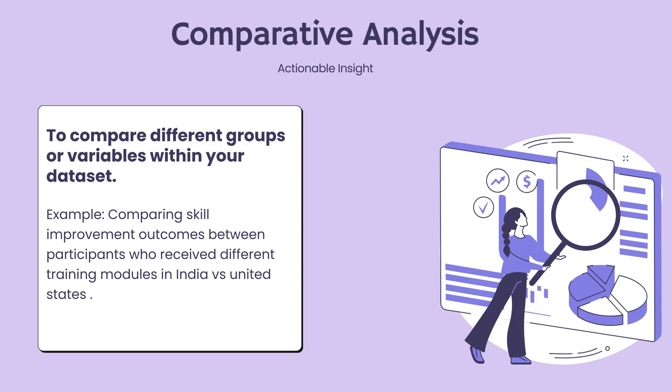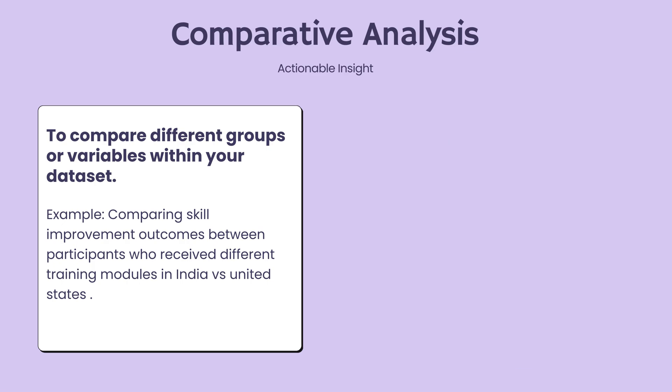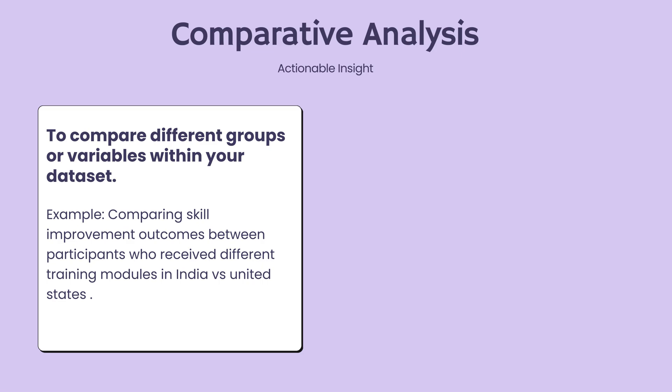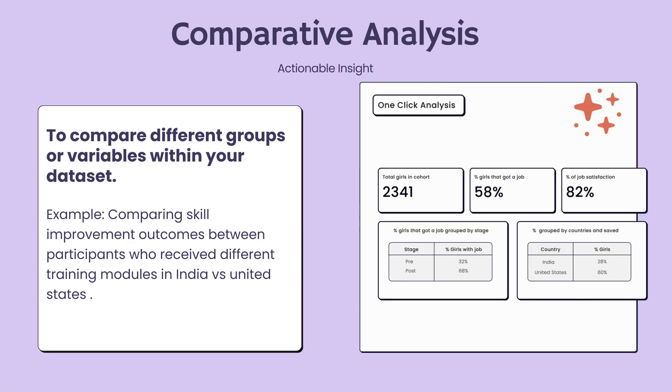Let's delve into our next analytical approach: comparative analysis. Our learning objective is to determine and compare data across varied categories or groups to highlight significant differences or similarities. This analysis becomes particularly useful when assessing the effectiveness of our training programs among a diverse group of participants. For example, we compare pre- and post-training assessment scores by country or gender, to see if training modules need modification for different countries or to attract specific genders.